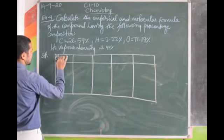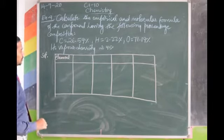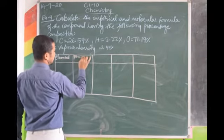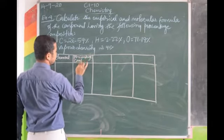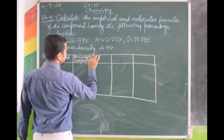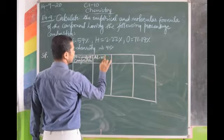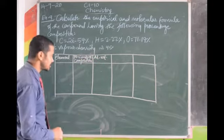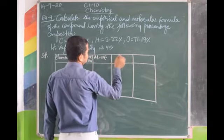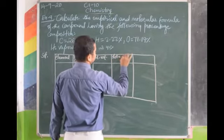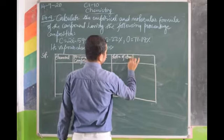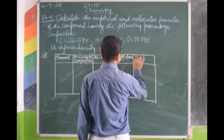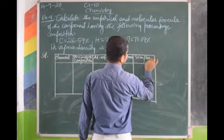Write element symbols, percentage composition, atomic weight — since there are atoms only, no molecules — then number of atoms or ratio of atoms, and simplest ratio. Before filling the table, add all percentages to check they total 100%.